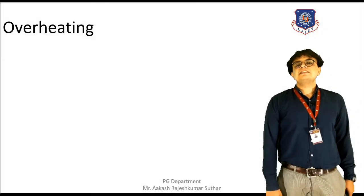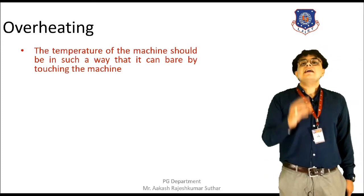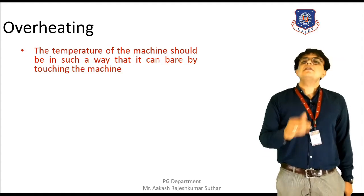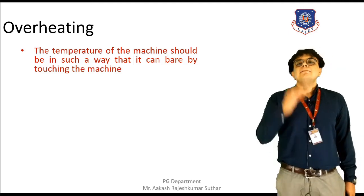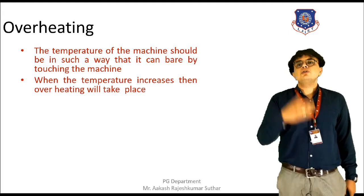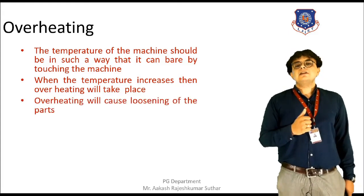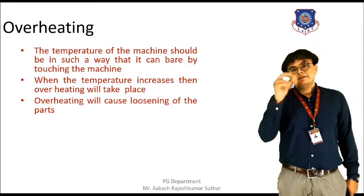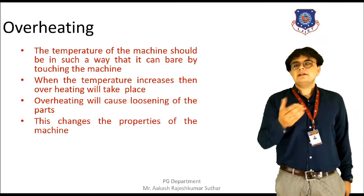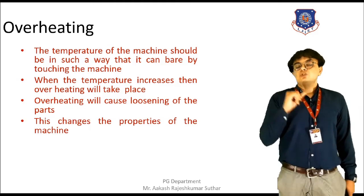First topic for discussion is overheating. We all know that the machine that is being designed should have some design temperature — a standard temperature that can be resisted by the machine. But due to some occurrence or due to overloading, the temperature increases. That will not be tolerated by the machine, and as a result, loosening of the parts will occur. The machine's spare parts will start loosening, and as a result, its load-taking capacity will be reduced, and ultimately the properties will also get reduced. This is how overheating will affect the machine.